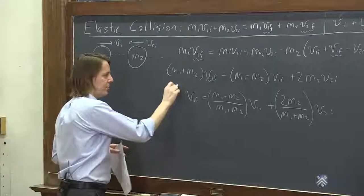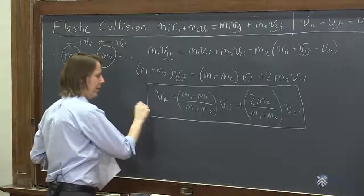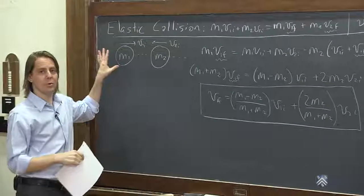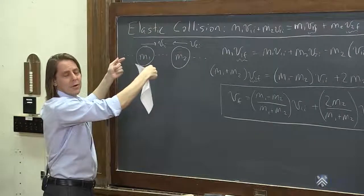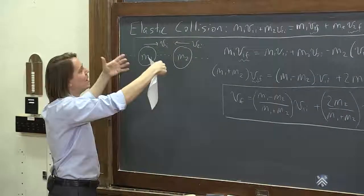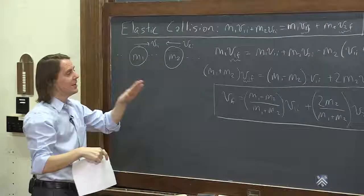And this is sort of the general solution for how fast mass one will go in this collision. No matter what the values of V1i and V2i are, or how fast you're initially going. They have to be going in a way where they will actually collide. They have to actually be heading towards each other. But that's how you get it.